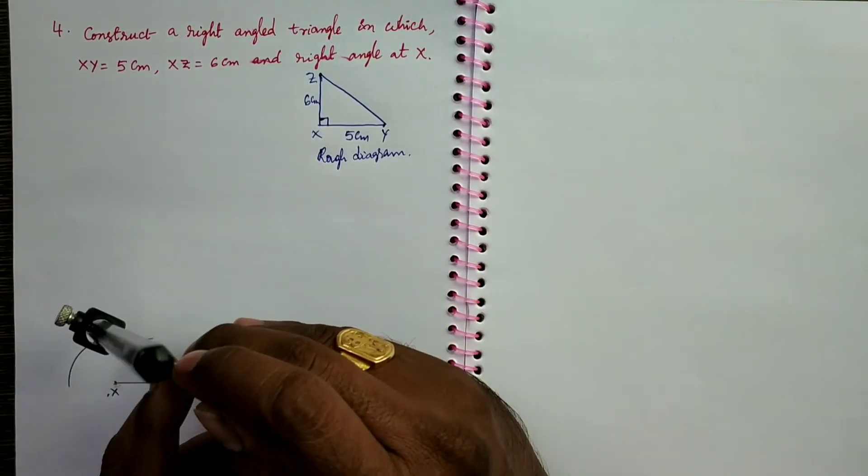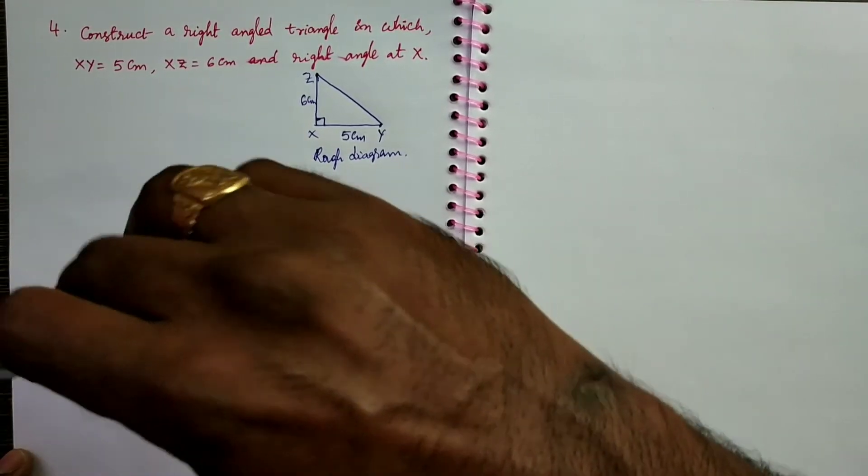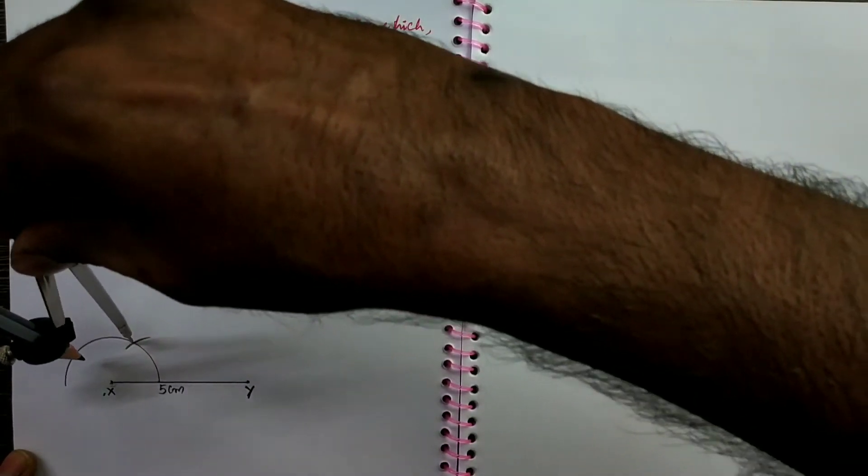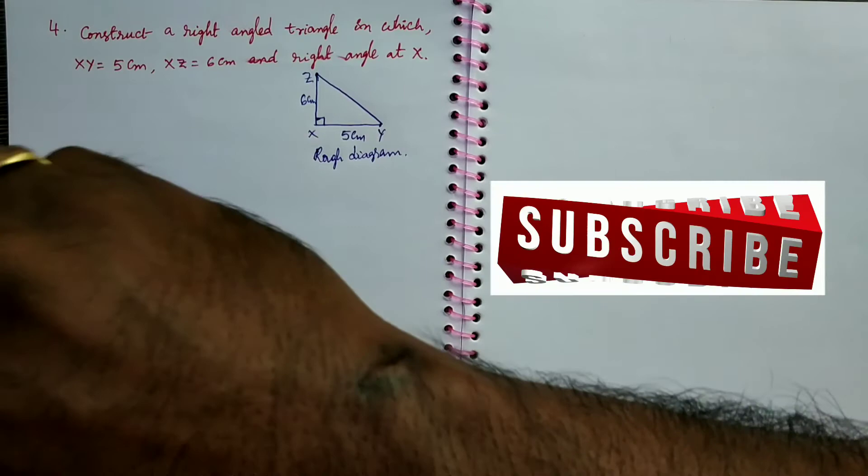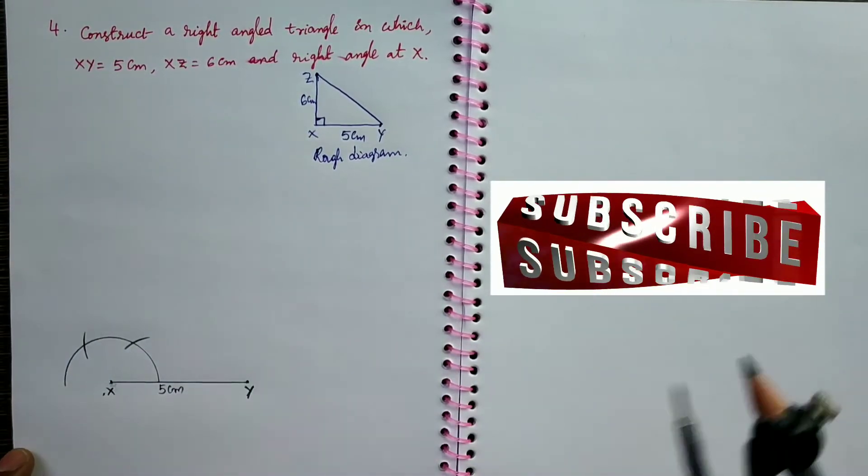From 60 degrees, draw another arc. Again, like this. It indicates 120 degrees.